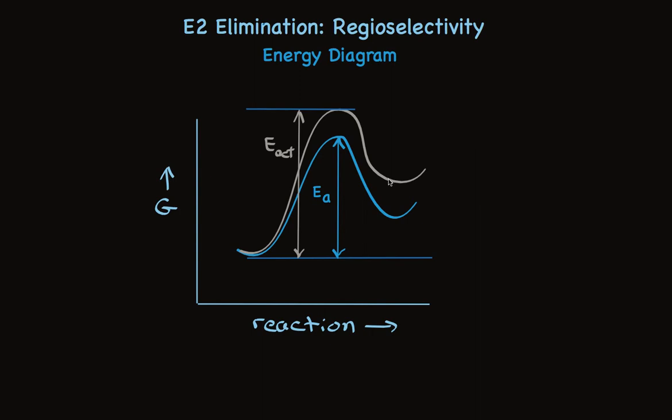So the major product, which is the more stable one, has an activation energy that's lower, which means the transition state is more stable.